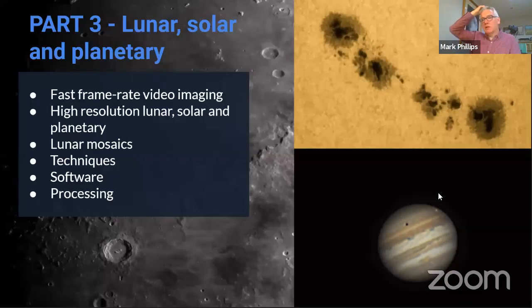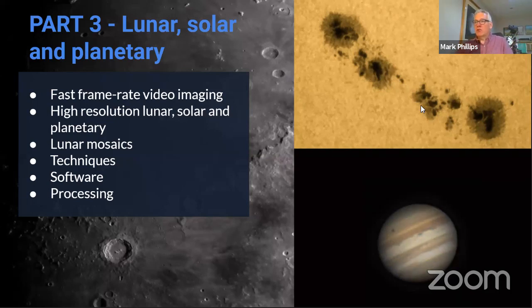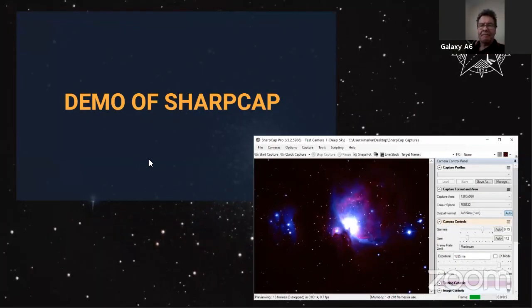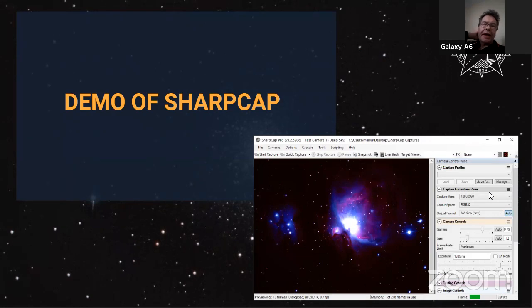That's pretty much the end of today's session before we go on to what's next week. Are there any questions? There was a question about the histogram being shown in black and white — the person has been fiddling around with Registax and it was in colour. Are they better just experimenting in black and white?